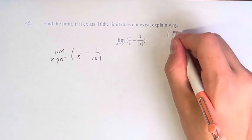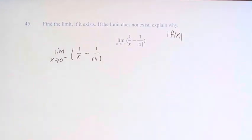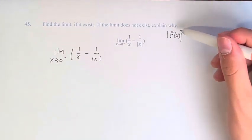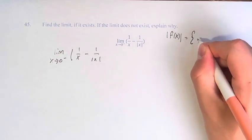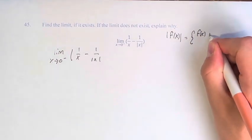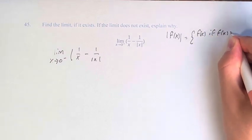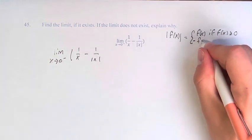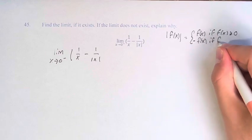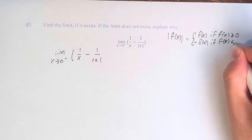So the absolute value of a function, whatever that function is, anything you're putting into an absolute value, this is equal to the function itself if it's greater than or equal to 0. However, it's equal to negative of that function if f of x is less than 0.